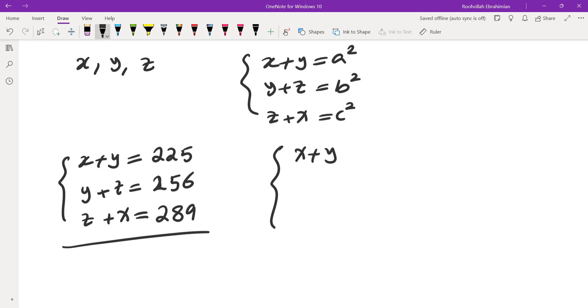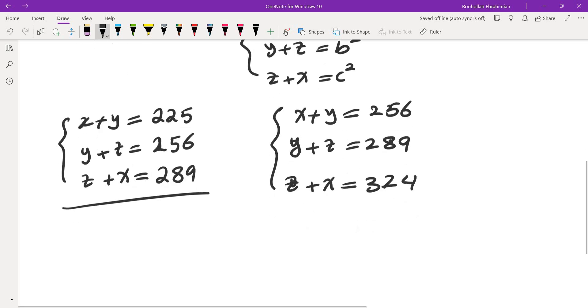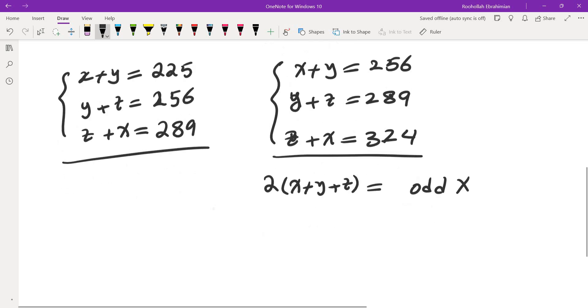Then I tried the next one, if you try the next one, x plus y equals 256, y plus z equals 289, and z plus x equals 324, you would actually get that x, y, z are not integers because when you add these up, on this side you get 2 times x plus y plus z, and on this side you get some odd numbers. So that doesn't work. So then I realized that if I were to take these three perfect squares, two of them must be odd, and the other one must be even, or all three of them be even.